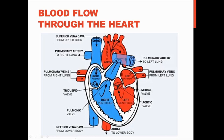To recap quickly: deoxygenated blood comes in through the inferior and superior vena cavae into the right atrium, through the right AV valve or tricuspid valve into the right ventricle, then through the pulmonary semilunar valve into the pulmonary trunk, which splits into left and right pulmonary arteries to the lungs. Oxygenated blood returns through the pulmonary veins into the left atrium, through the mitral or left AV valve into the left ventricle, and finally through the aortic semilunar valve into the aorta to supply the whole body.